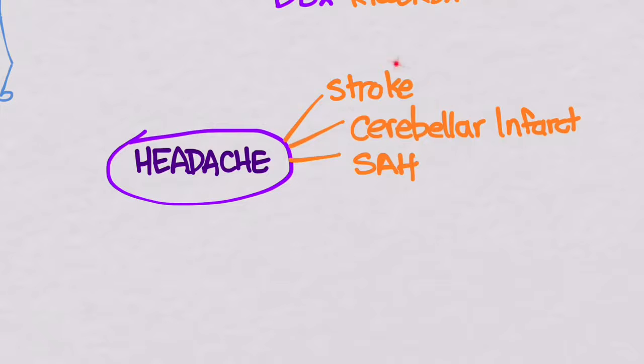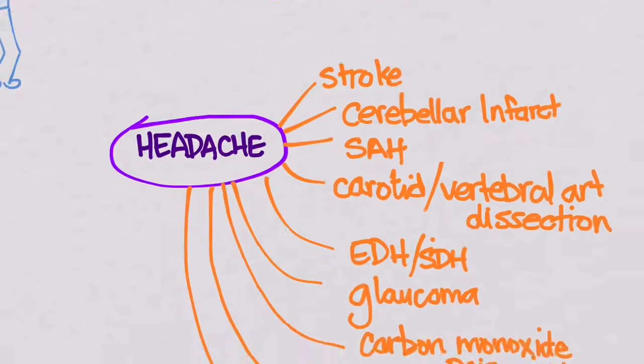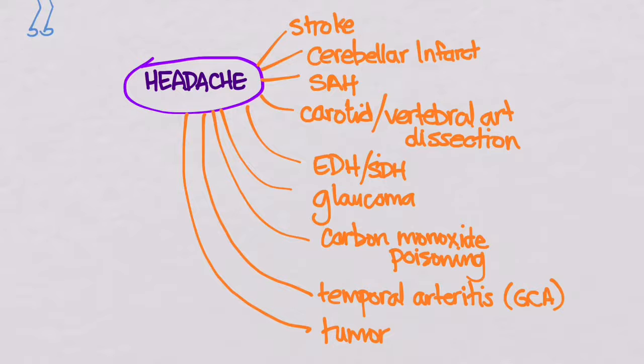You'll have a couple of strokes in them. A stroke, a cerebellar infarct which could quickly lead to herniation, subarachnoid hemorrhages, bleeding in the head. Carotid and vertebral artery dissections, which can happen from mild trauma. And epidural and subdural hemorrhages, which can happen from bigger traumas. Though sometimes, especially on old people and people who are anticoagulated or alcoholics, they will have mild trauma as well that causes this. Other things you're going to want to put on the list include glaucoma, carbon monoxide poisoning. This can kill somebody, especially when they go back home to it. Glaucoma will affect their vision. Temporal arteritis can lead to permanent blindness, also called giant cell arteritis. And a brain tumor.